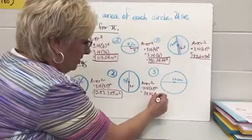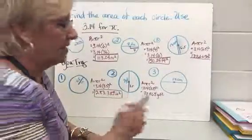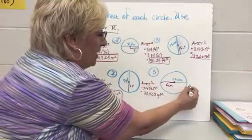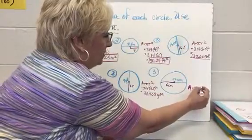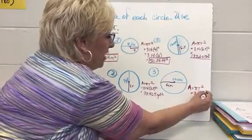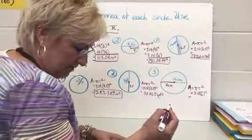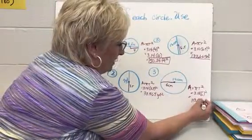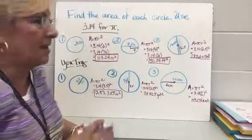Here I've got a diameter of twelve centimeters, so the radius is six. Plugging into the calculator: area equals pi r squared, where pi is 3.14 and six squared gives me 36. Thirty-six times 3.14 gives me 113.04 centimeters squared.